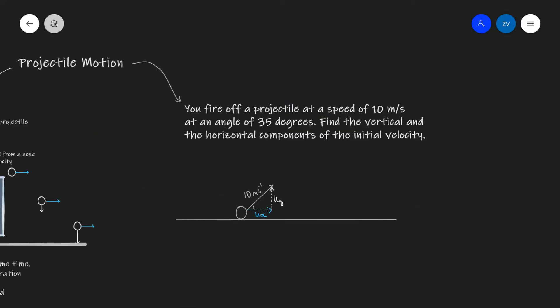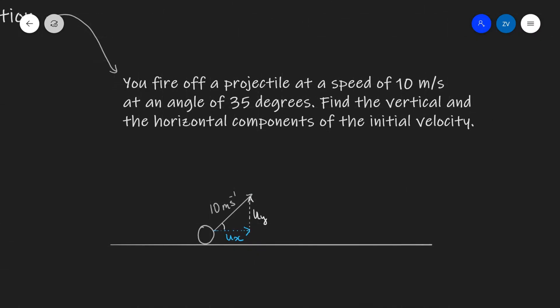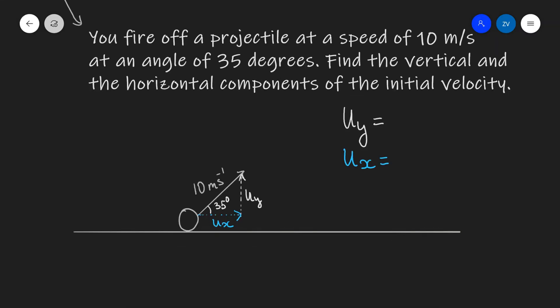Now let's have a go at a few problems regarding projectile motion. First off, let's imagine that we're firing off a projectile at a speed of 10 meters per second at an angle of 35 degrees. Let's find the vertical and the horizontal components of the initial velocity. We're going to start off by resolving the 10 meters per second vector into a horizontal component and a vertical component. The vertical component of the velocity we're going to call u_y and the horizontal component we're going to call u_x.